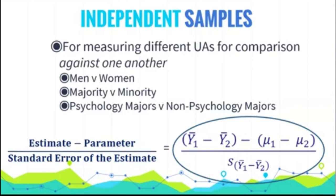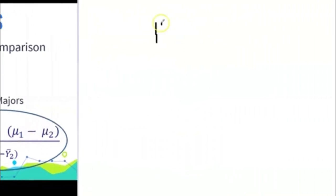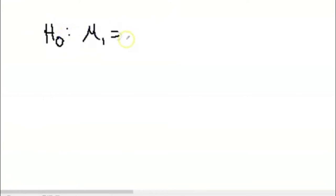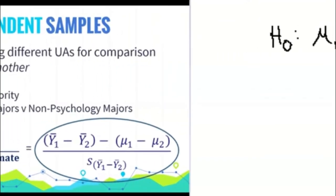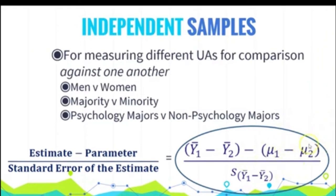Now, under the null hypothesis, this term here, the difference between the population averages, under the null hypothesis we're going to say what? Well, the null is going to say that mu1 equals mu2, which is the same thing as saying that mu1 minus mu2 equals 0. So under the null hypothesis, this term disappears. So we don't even include this. I wanted to put it just so that you see that it is officially part of the math, but it's not necessary.